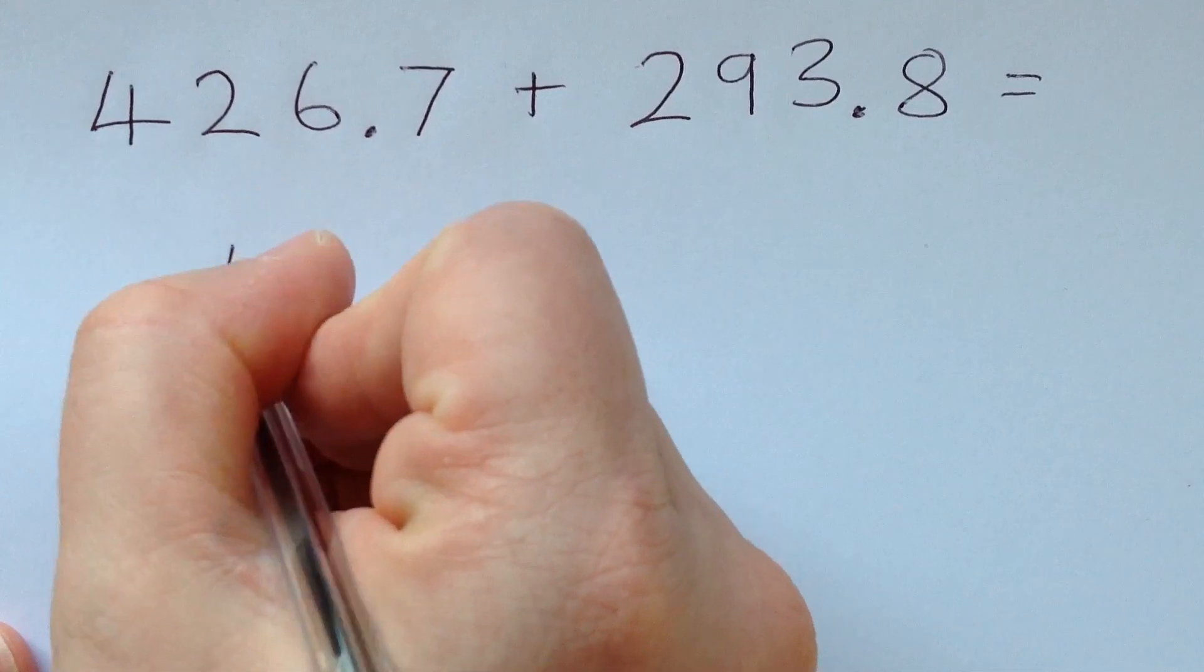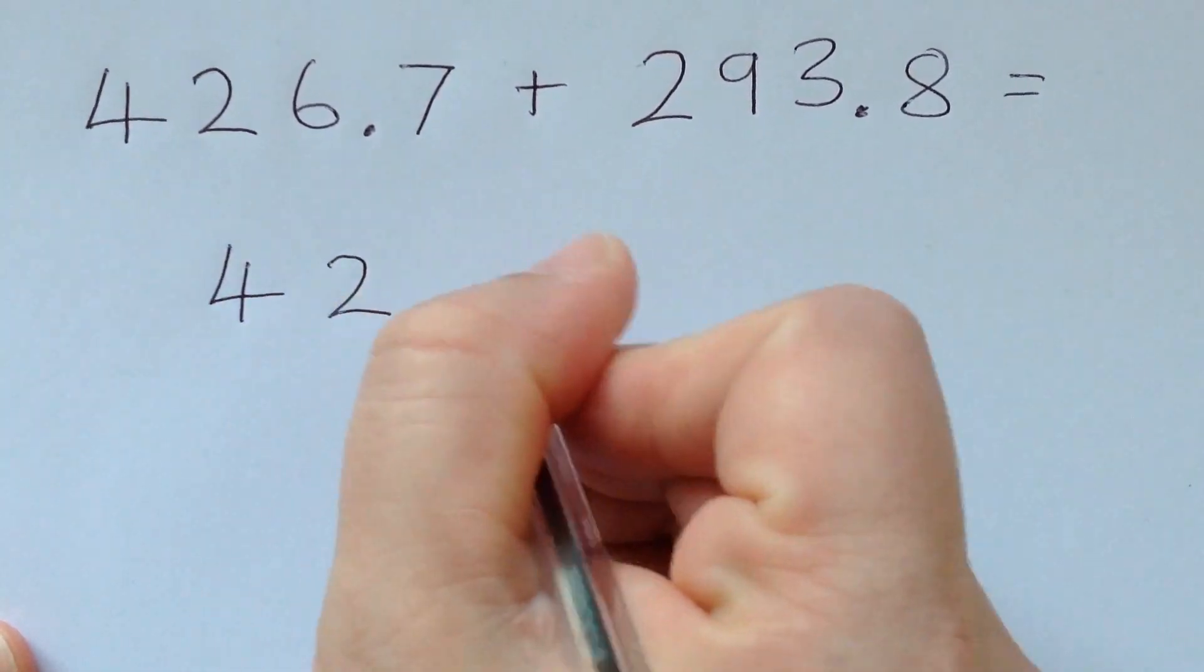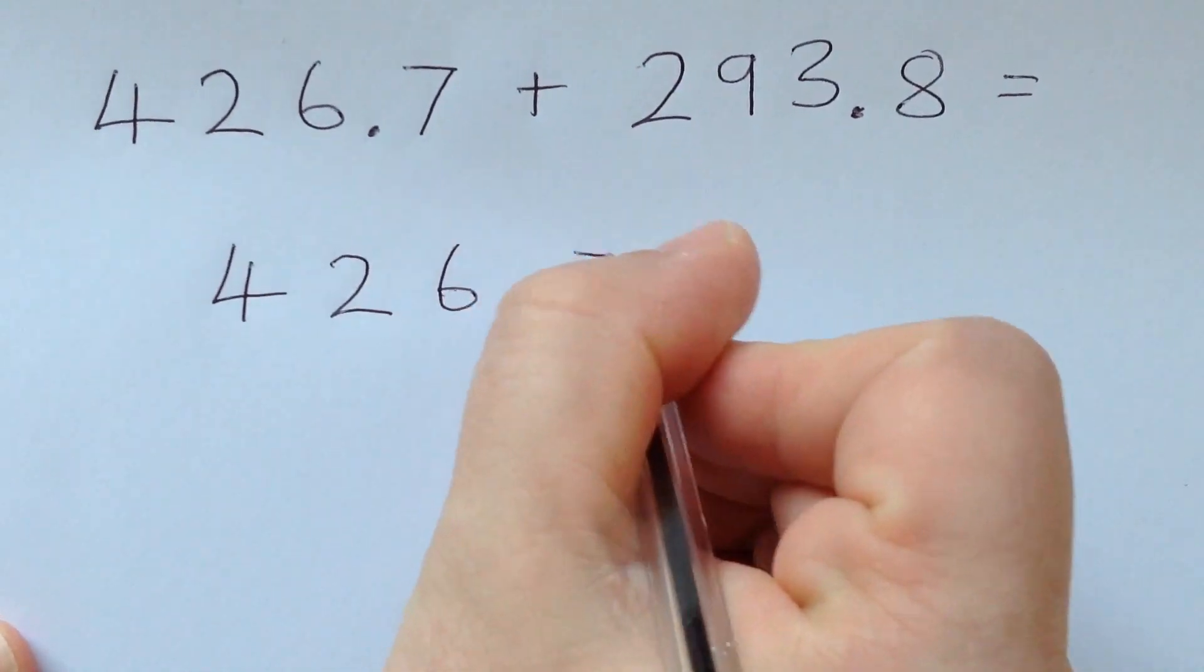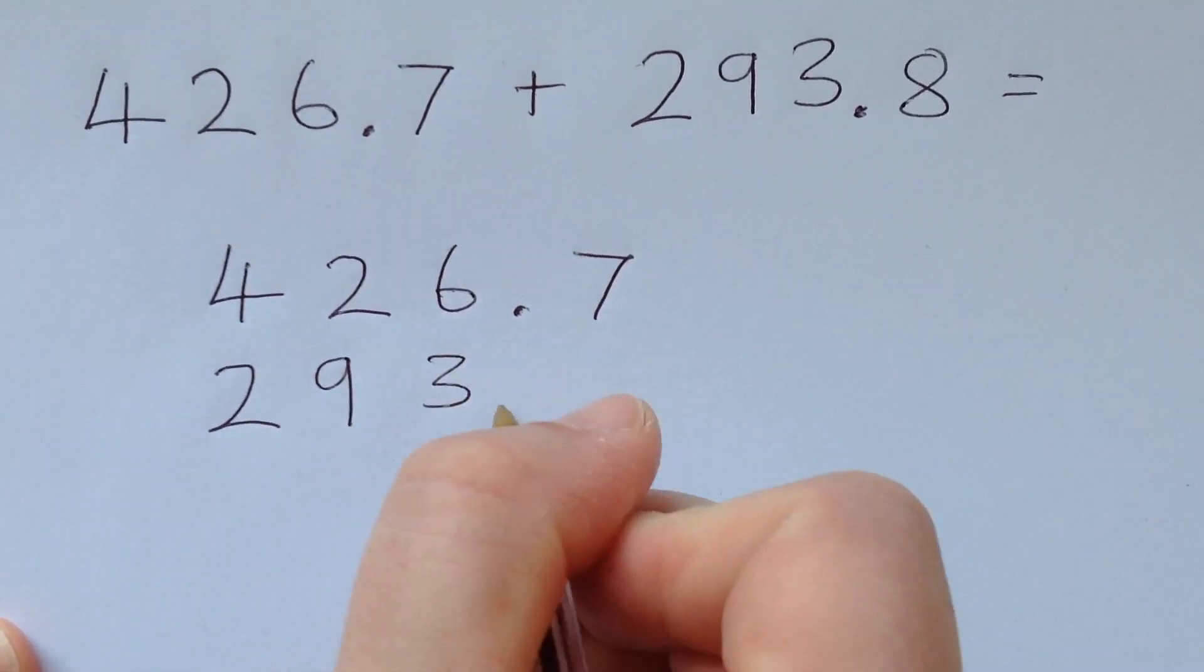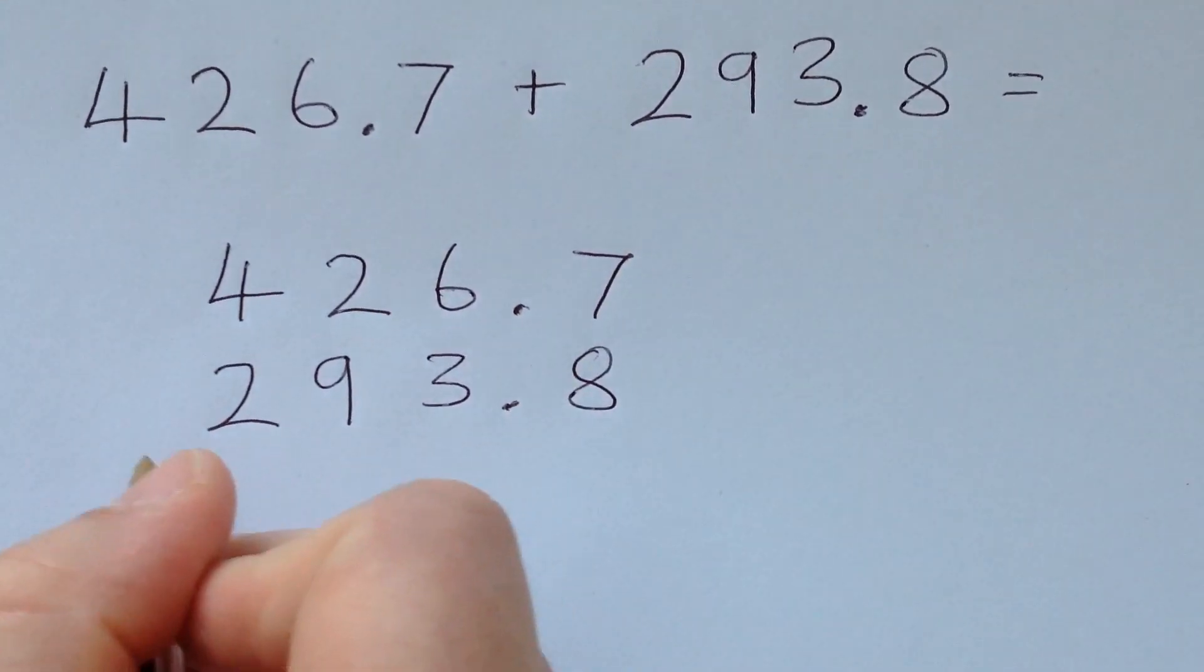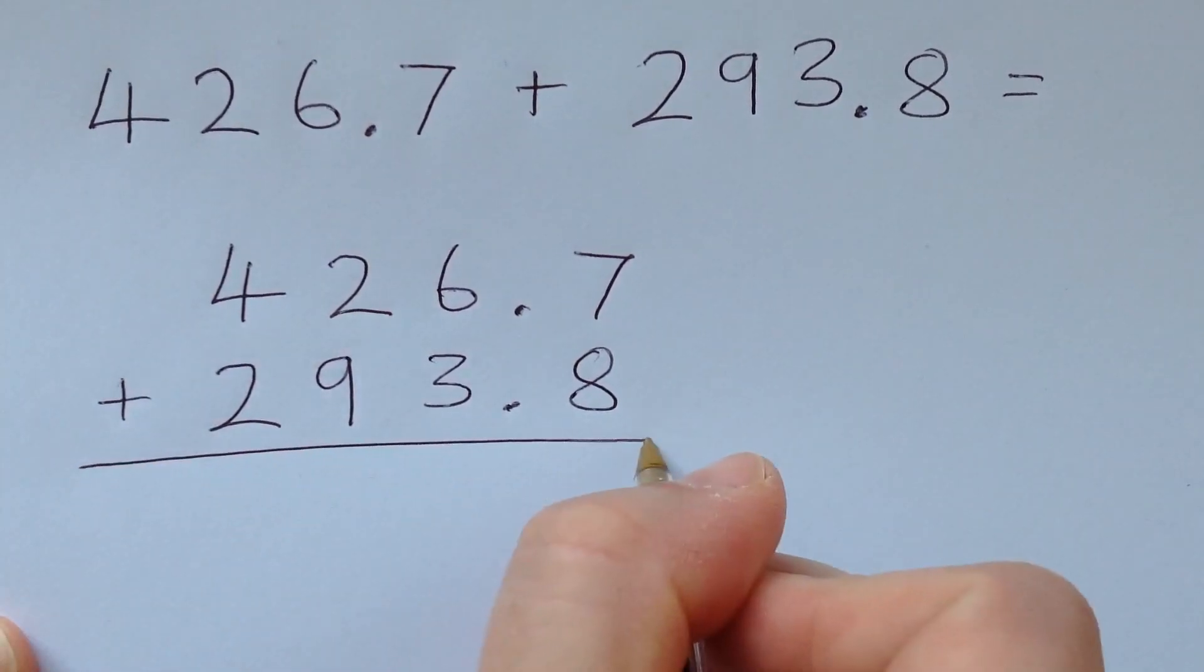So let's add them together. So I've got, again, 426.7, 293.8, plus symbol, line underneath.